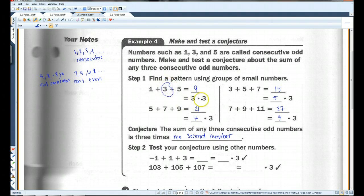Here, the second number is three. Three times three is nine. Here, the second number is seven. Seven times three is 21. Five, five times three is 15. Nine, nine times three is 27.